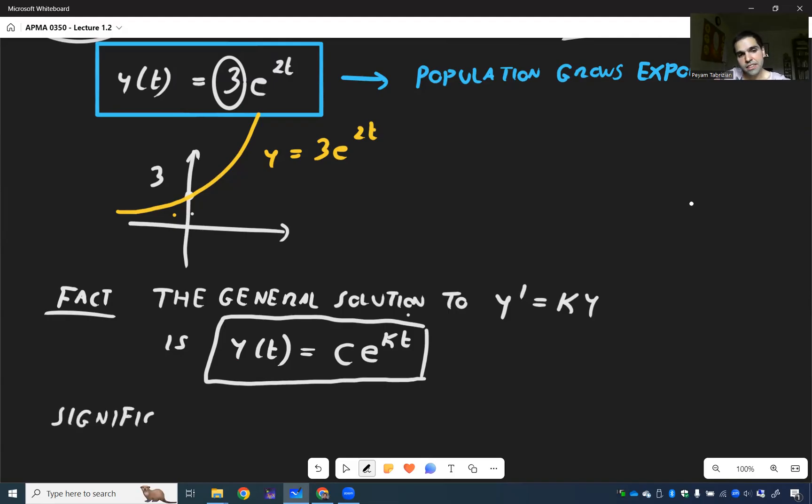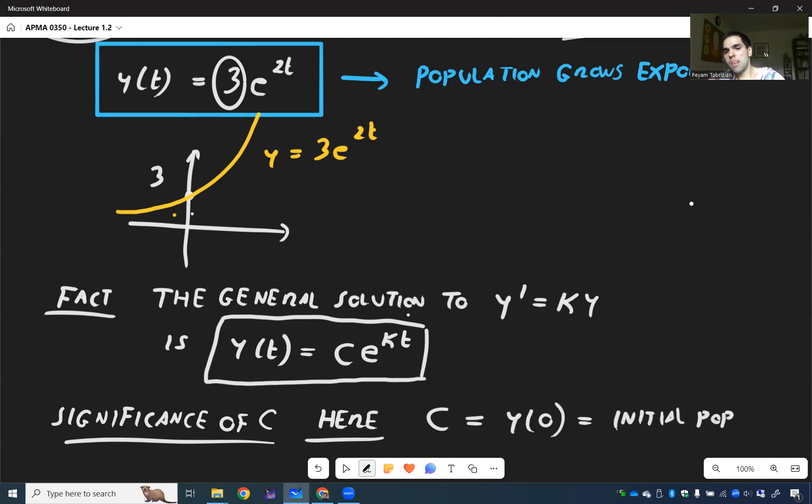So, the significance of c. So, in fact, here, c is, in fact, y of 0, which is the initial population. Again, this will not always be true for all our differential equations, but it is true in this case.